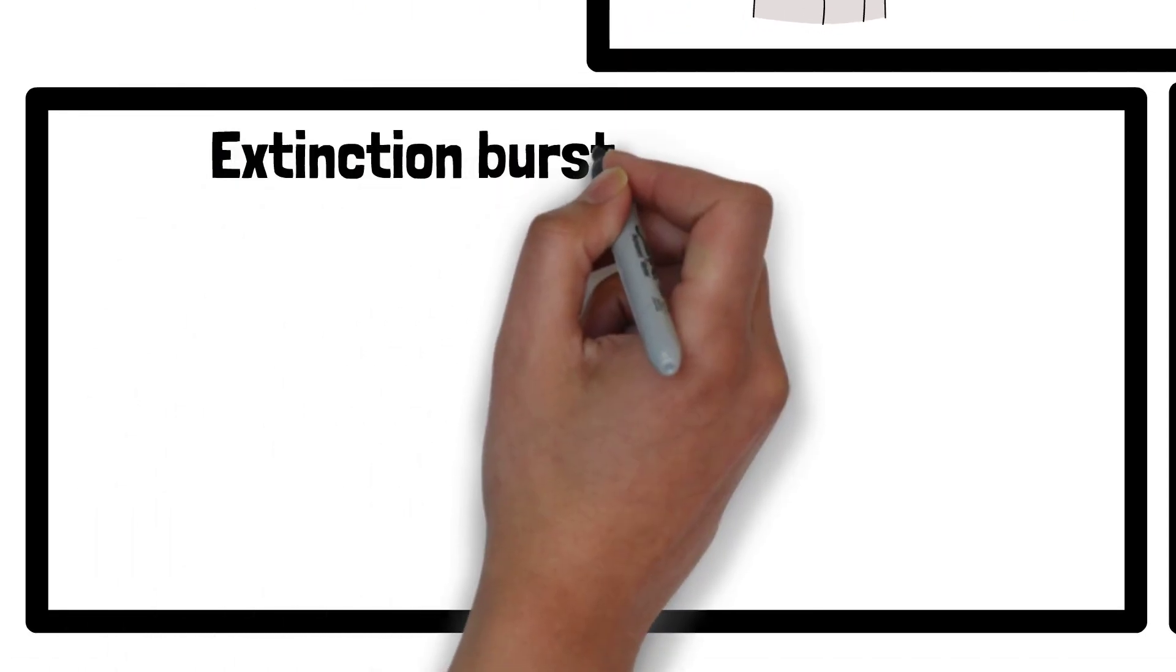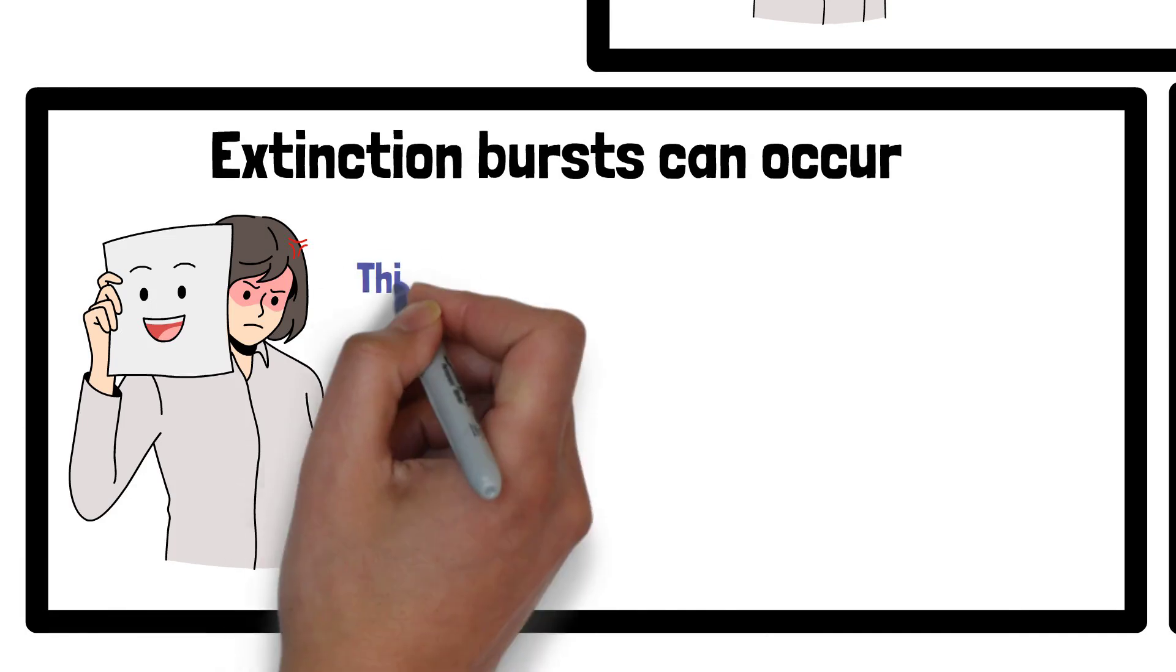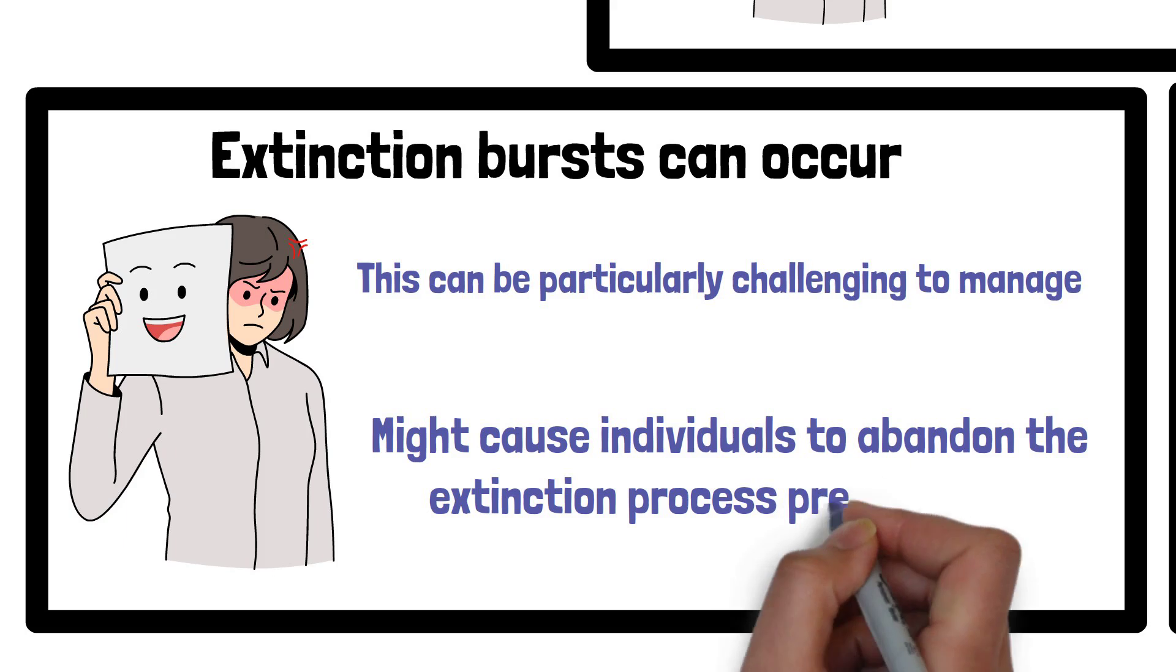Second, extinction bursts can occur where the behavior temporarily increases in intensity before it decreases. This can be particularly challenging to manage and might cause individuals to abandon the extinction process prematurely.